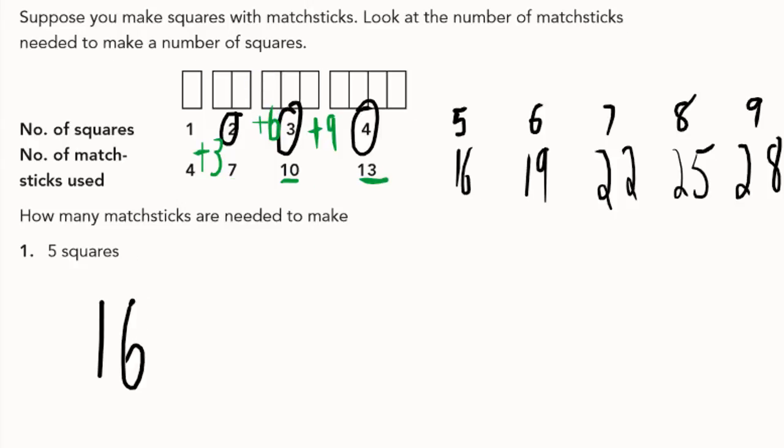Alright, so what we want to consider is that for every additional square, we're adding another group of three. So when n is two, we need to add one group of three to four. So one group. Let's switch colors. We'd add one group of three when n is two. When n is three, we're adding two groups of three to our original number of matchsticks, four. So two groups. When n is four, well, nine is three groups of three. So we'd be adding three groups of three.